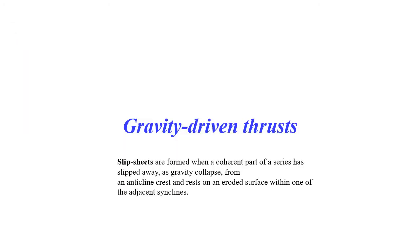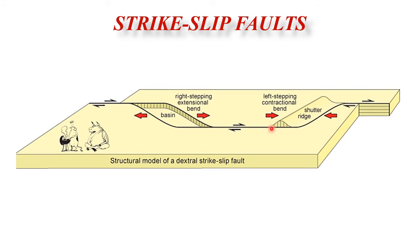Gravity-driven thrust slip sheets form when a coherent part of a series slips away as gravity collapse from an anticline crest and rests on an eroded surface within an adjacent syncline. Strike-slip faults are in general vertical and develop at 30 degrees to the horizontal compression direction. Major strike-slip faults can be traced over several hundreds of kilometers. They often develop systems of right-stepping or left-stepping faults — right-stepping generating an extensional zone and left-stepping generating a compressional zone.